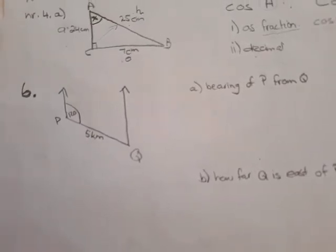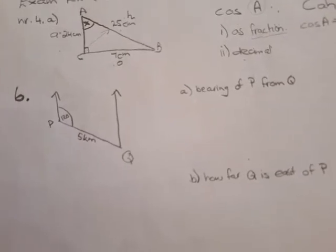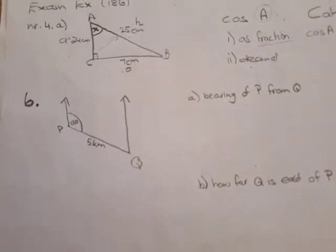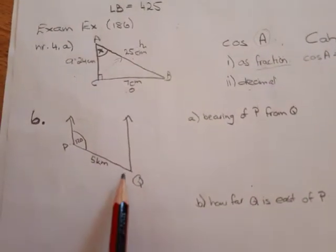Here follows the exam exercise on page 186, question 6. What they are telling you is that you basically got two ports, port P and port Q.